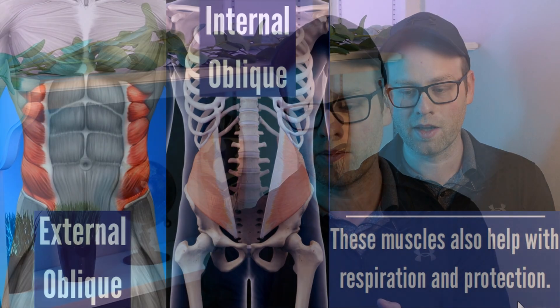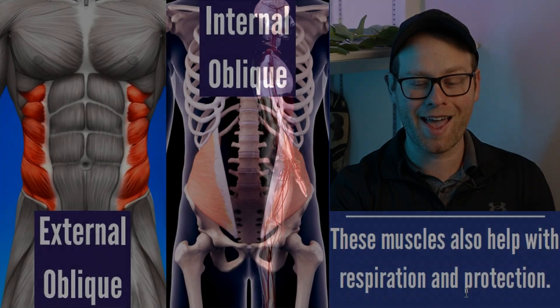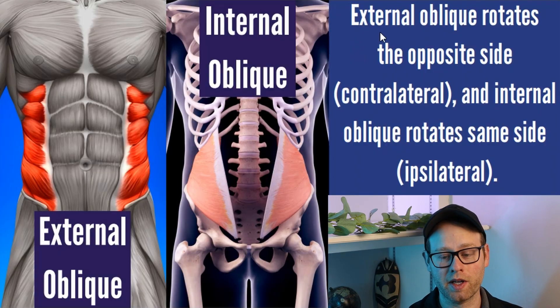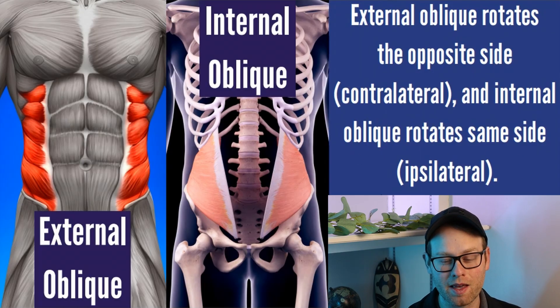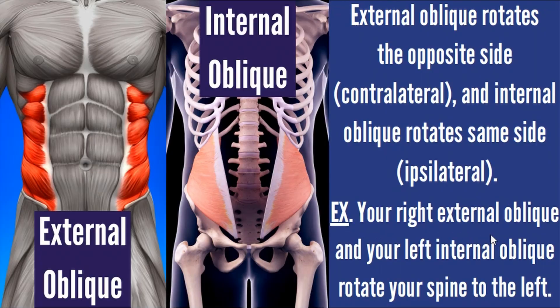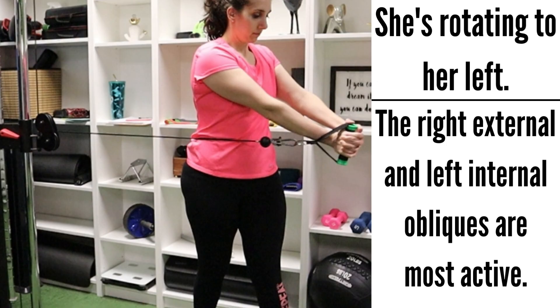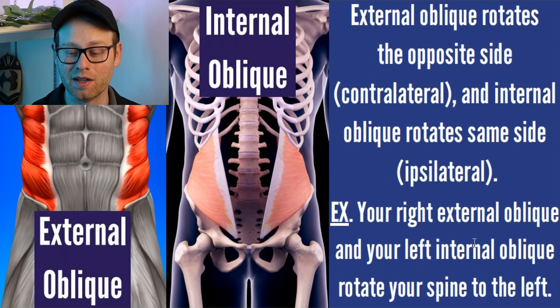Pretty much all muscles help with protection, but you have a lot of vital organs beneath that midsection, so all these core muscles are extra helpful for protection of those organs. Your external oblique rotates the opposite side — the contralateral side — and the internal oblique rotates the same side — the ipsilateral side. For example, your right external oblique and your left internal oblique rotate your spine to the left. This detail occasionally pops up on trainer certification exams.